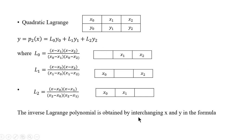The inverse Lagrange polynomial is obtained by interchanging x and y in the formula. Suppose I need inverse quadratic Lagrange, then here in the place of y I replace x. So x is equal to L0 x0 plus L1 x1 plus L2 x2 will be the inverse quadratic Lagrange, where L0 is obtained by replacing x by y. Y minus y1 y minus y2 divided by y0 minus y1 y0 minus y2. Like that you have to find L1 and L2 also.